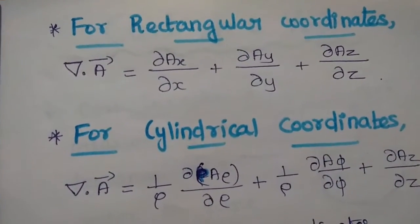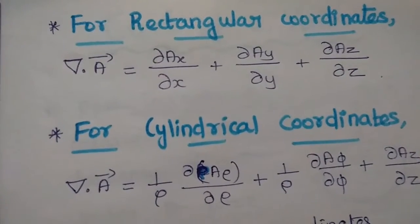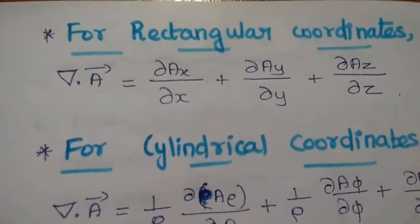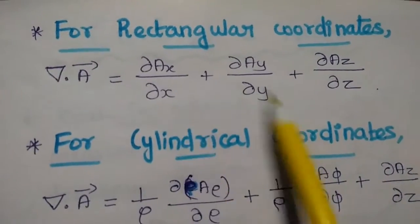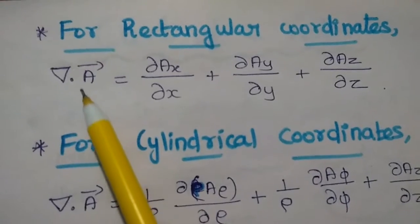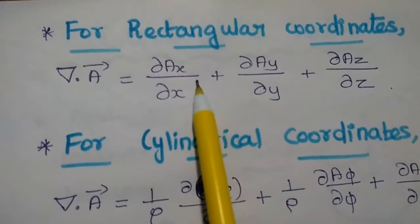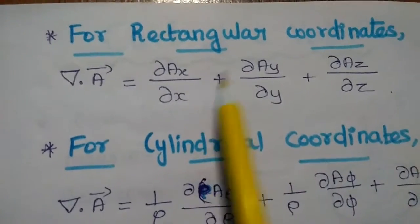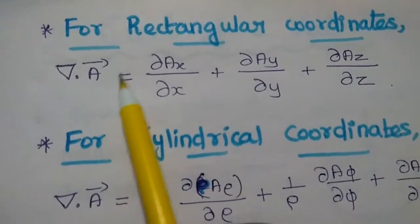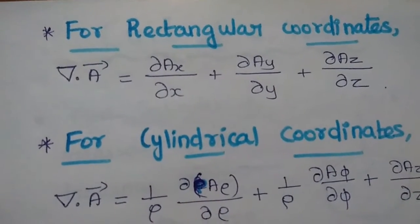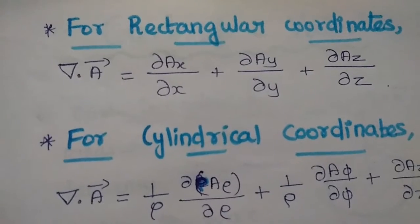Next, how are we going to represent the divergence in three different coordinate systems? Starting with the rectangular coordinate system — x, y, z. Divergence of a vector field is a scalar, meaning it does not have any direction. Del dot A vector is equal to ∂Ax/∂x + ∂Ay/∂y + ∂Az/∂z. This is the divergence formula for the rectangular coordinate system.